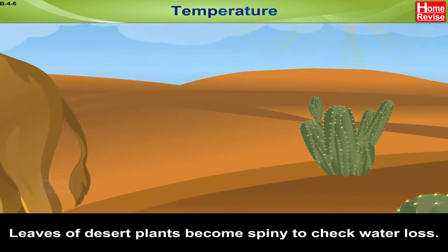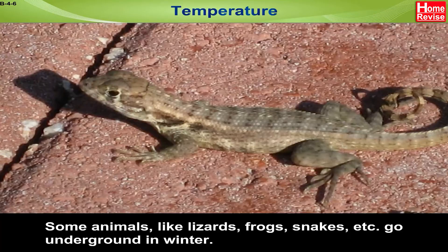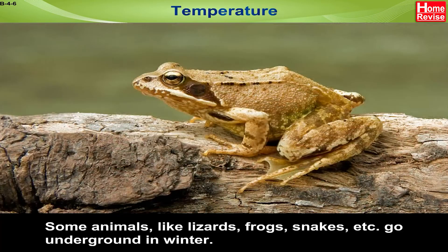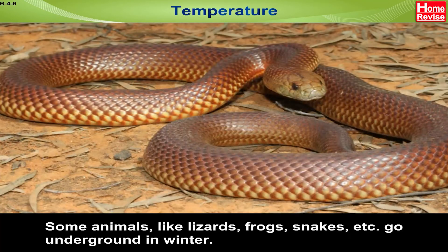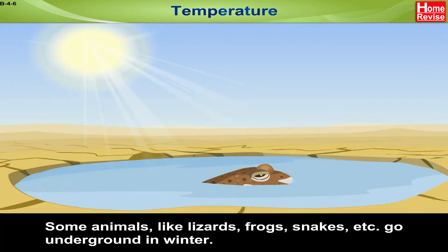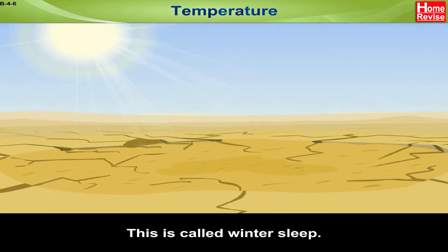Leaves of desert plants become spiny to check water loss. Some animals like lizards, frogs, and snakes go underground in winter — this is called winter sleep.